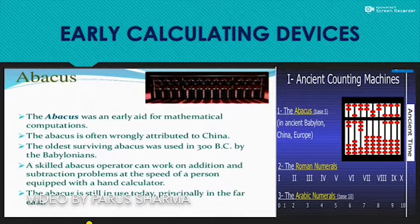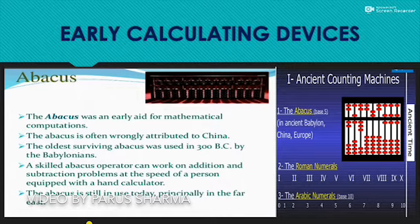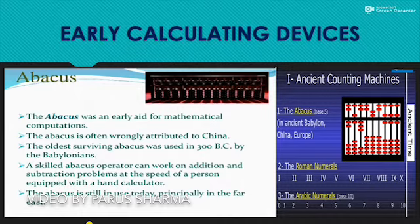Abacus was invented about 5,000 years ago by the Chinese. It can do addition, subtraction, and perform various calculations. You have also used abacus in your early classes like first or second for calculations, and also may have made it as a project, as shown in this picture.